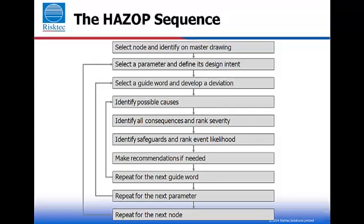What could cause these particular deviations? For example, are valves closed or blocked? What would the consequences of this particular deviation be? These are all the consequences in terms of safety, health, environment, asset damage or operation.